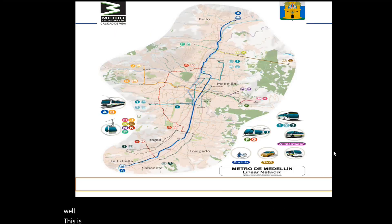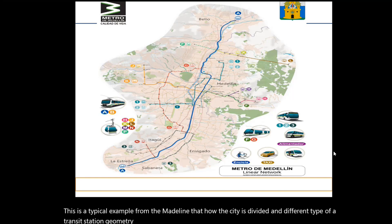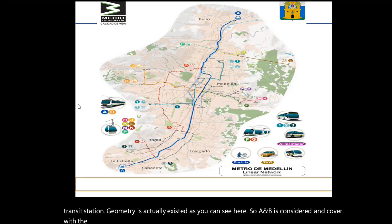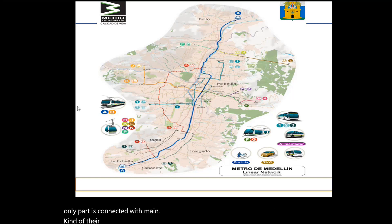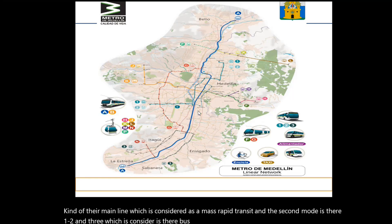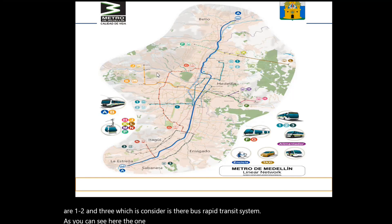This is a typical example from Medellín showing how this city is divided and what different types of transit station geometry exist. A and B are covered with the mass rapid transit, forming the major arterial network from A to A and from B to the main line. The second mode is lines 1, 2, and 3, which is considered their bus rapid transit system. Lines 1 and 2 actually exist near the Medellín city center.